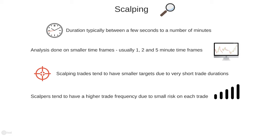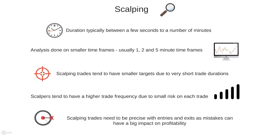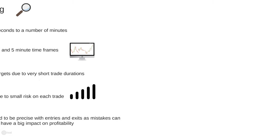As you may have already guessed, the commissions or spreads on trades don't become any smaller just because the trade duration is very small. So a scalper has to be very precise with their entries and exits, as small mistakes can have a large effect on their performance.